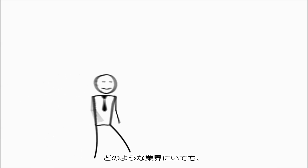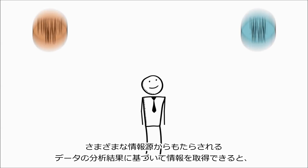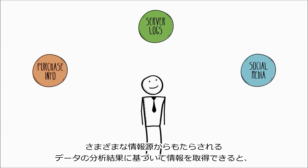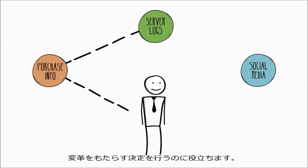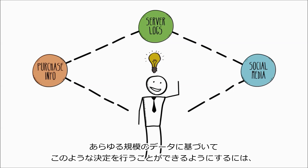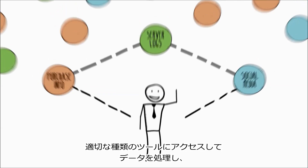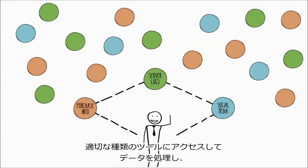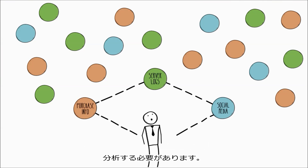Whatever kind of industry you're in, being able to obtain information based on analysis of data coming from a wide variety of sources can help you make transformational decisions. To be able to make these decisions based on data of any scale, you need to be able to access the right kind of tools to process and analyse your data.